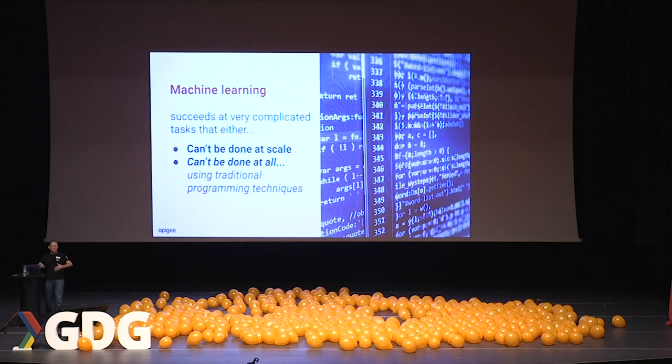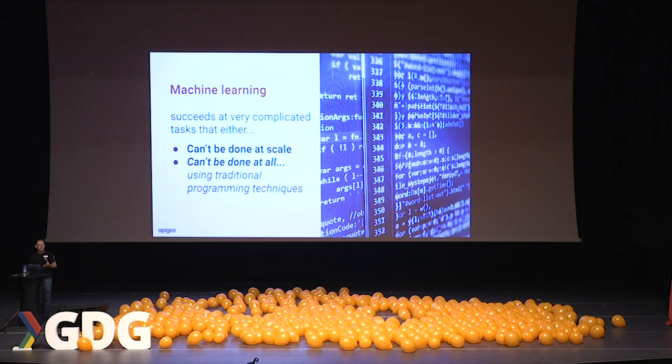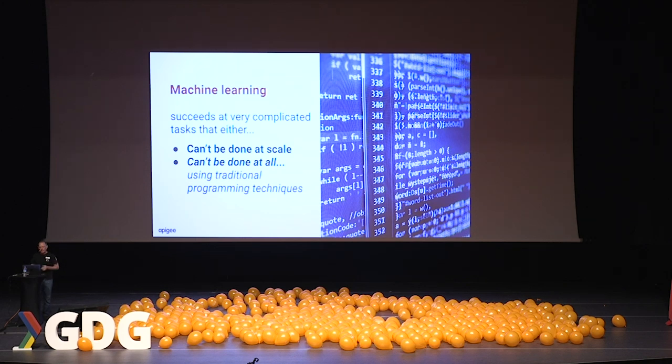Machine learning generally is used to address two classes of problems: problems that can't be done at scale — meaning there aren't enough people in the world to do these things — and problems that can't be done at all using traditional programming techniques.